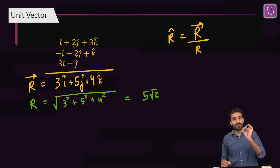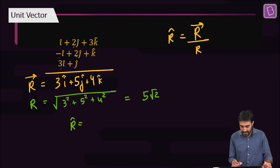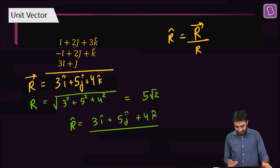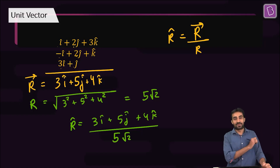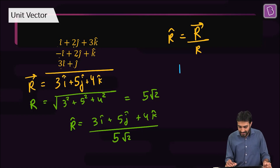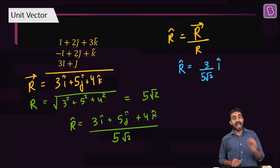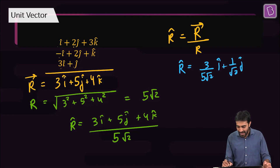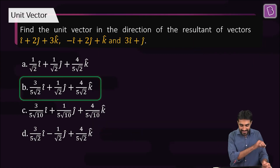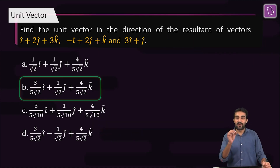The unit vector r-cap is (3i-cap plus 5j-cap plus 4k-cap) divided by the magnitude of r vector, which is 5 root 2. We can write this as: r-cap equals (3/(5√2))i-cap plus (1/√2)j-cap plus (4/(5√2))k-cap. Checking the options, option B is the right answer.